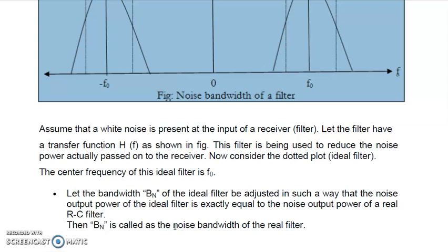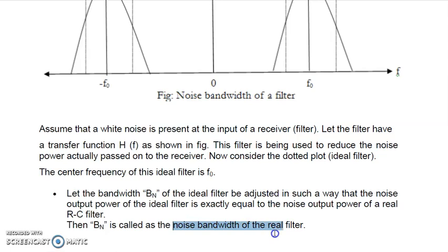If a practical RC filter can be designed to catch the total noise just as the ideal filter does, then the total noise can be filtered out. This is known as noise bandwidth. Whenever we are designing an RC filter for the receiver at the input or output stage, this noise bandwidth must be taken into account. If we know the noise bandwidth, we can accordingly choose the R and C values so that the total noise can be rejected. I hope you have understood — study it in detail. Thank you.